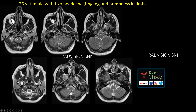Here you can see there is crowding of the structures at the level of foramen magnum. There is even effacement of the pre-medullary cistern and effacement of the CSF space between the medulla and the cerebellum. These are the reference normal images where the CSF spaces are clearly visualized around the medulla and the cerebellum.